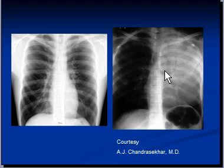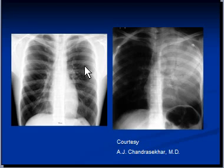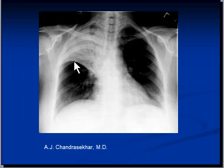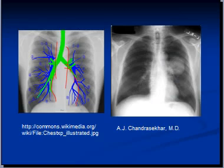These bronchial branches are clearly visible through the consolidated lung, whereas they would be impossible to see in normal lung. Air bronchogram is visible through this consolidated lung as well, and you can also see an air bronchogram in the right upper lobe in this X-ray.